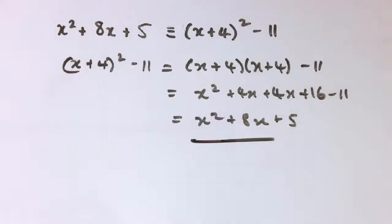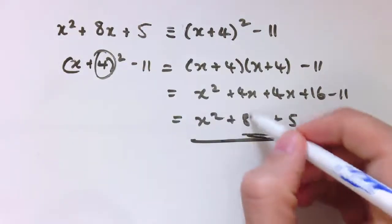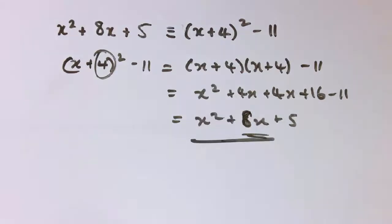Which is what we started with. And what we can see, when we multiply out something like x plus a number squared, that number in there ends up doubled down here, so it was x + 4 squared, and we end up with x² + 8x, and it also has an impact on the other number, but that's the main thing we'll use.